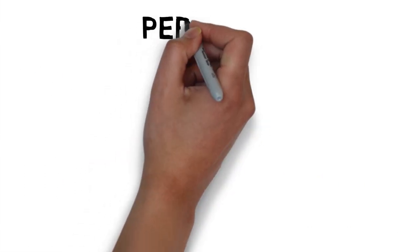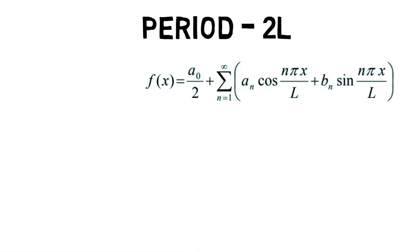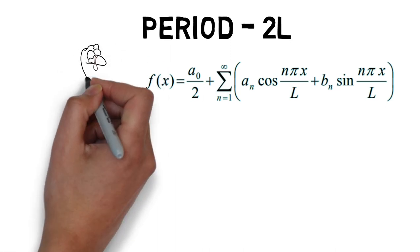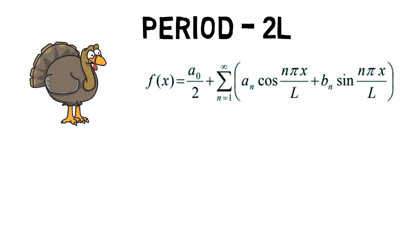Another type of Fourier series is a periodic function with period 2L. Suppose f is a periodic function with period 2L. Then the Fourier series of f is given by f of x equals a0 upon 2 plus summation of an into cos of n π x upon L plus bn into sin of n π x upon L from n equals 1 to infinity.